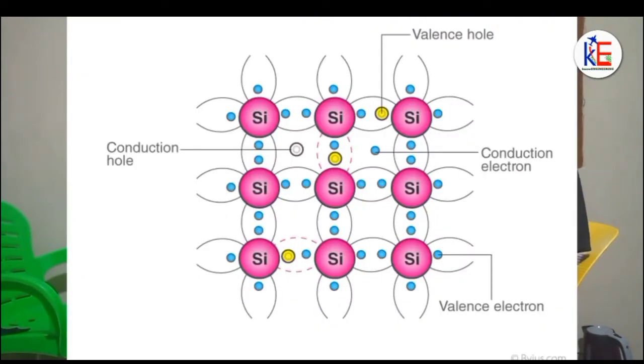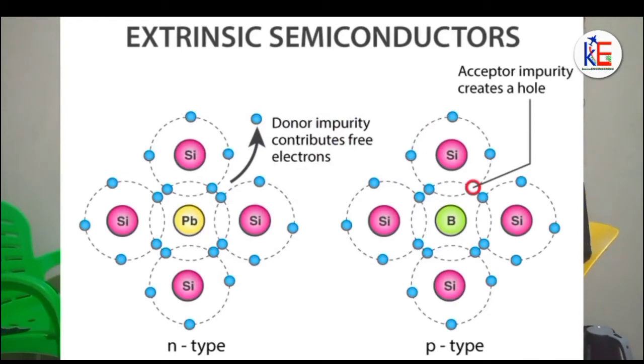Now let's look at the extrinsic semiconductor. Extrinsic semiconductors are the result of doping an impurity into intrinsic semiconductors. It can be a p-type or an n-type depending on the kind of impurity used.